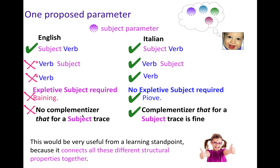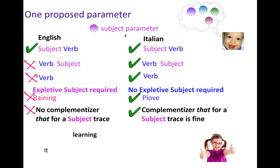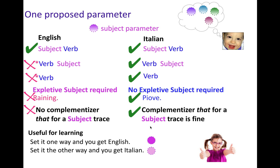We're talking about linguistic parameters. These are a collection of behaviors that you can observe subjects and other things in the language doing or not doing. It would seem that if they were connected together under one little switch — one little parameter — that would make learning about all these different properties easier. So English treats the subject one particular way; the subject is very important. Italian treats it differently — the subject maybe isn't as pivotal. You can leave it out, you can invert the order. So set it one way and you get English, set it the other way and you get Italian. You can explain a cluster of subject behavior by just learning about one thing.